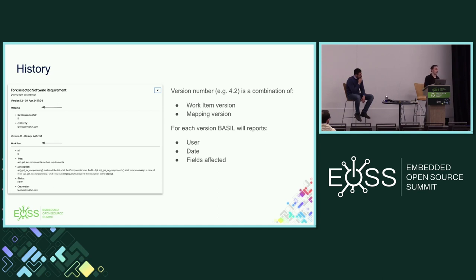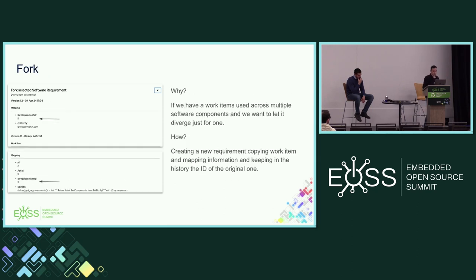As a quality engineer you need to track any evolution because software is in continuous evolution. BASIL keeps track of any changes automatically. The version number is a composition of two elements: the first number is related to the work item itself and the second to the mapping. On any changes, you will see the user who made the change, the date, and the list of fields affected, presented in a modal view when you request the history of an element. BASIL also supports reuse, which is applied in vendor tools too - you can have a software requirement used across thousands of software components.